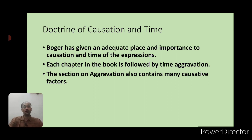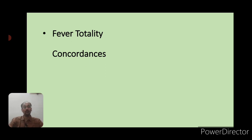Boger and Boenninghausen gave adequate place and importance for causative modalities and time modalities in their totality. Fever totality is a unique feature of this repertory — it contains different rubrics and conditions related to fever. This fever totality was taken from the repertorial book by Dr. Boenninghausen named the Repertory of Intermittent Fever. Concordance is also taken from the concept and philosophy of Dr. Boenninghausen's repertory.